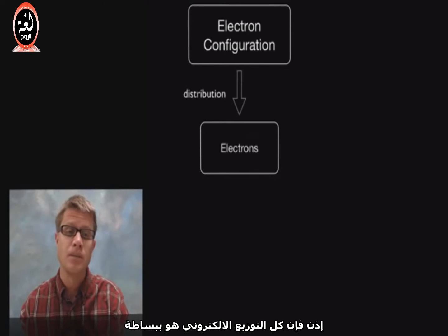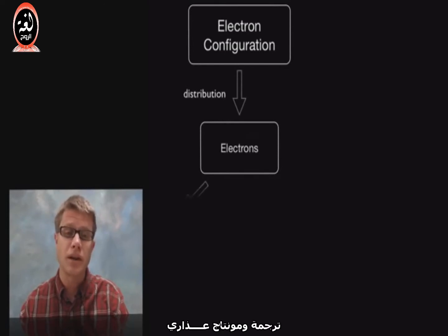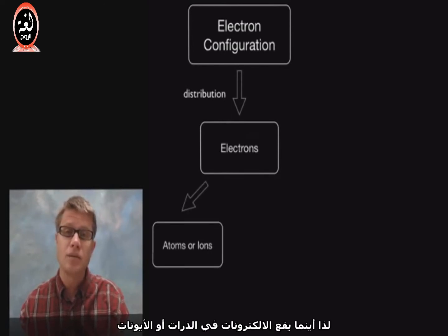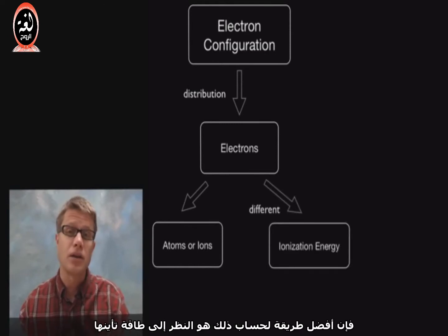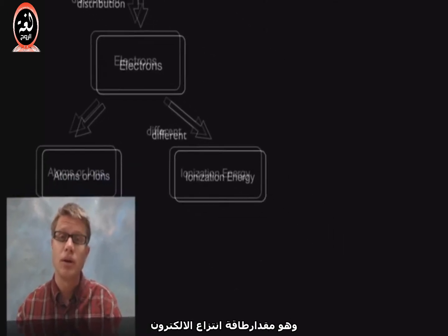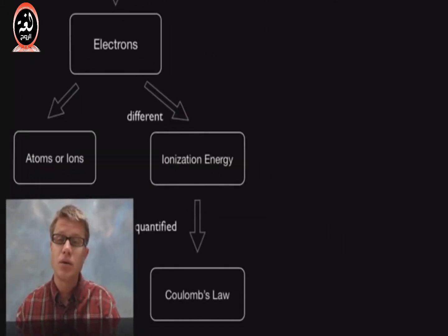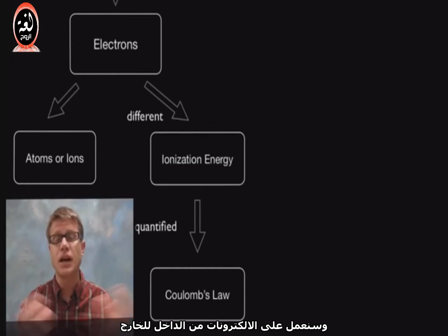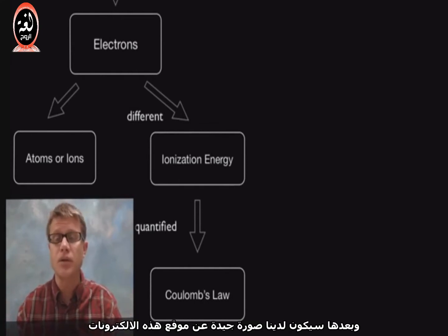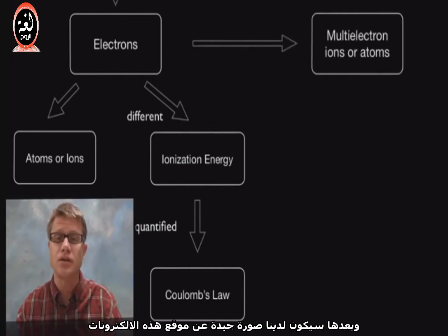All electron configuration is, is simply the distribution of electrons — where the electrons are found in atoms or in ions. A good way to figure that out is to look at their ionization energy, which is the amount of energy it takes to pull an electron away. We can quantify that by using Coulomb's law, working our way out from the electrons on the inside to those on the outside, giving us a pretty good picture of where all those electrons are.